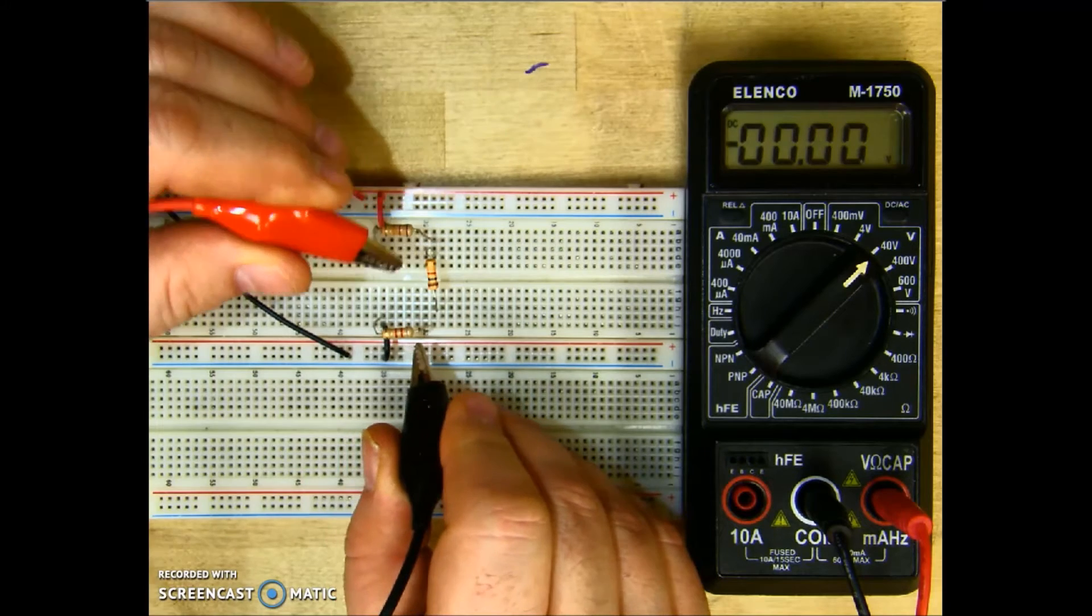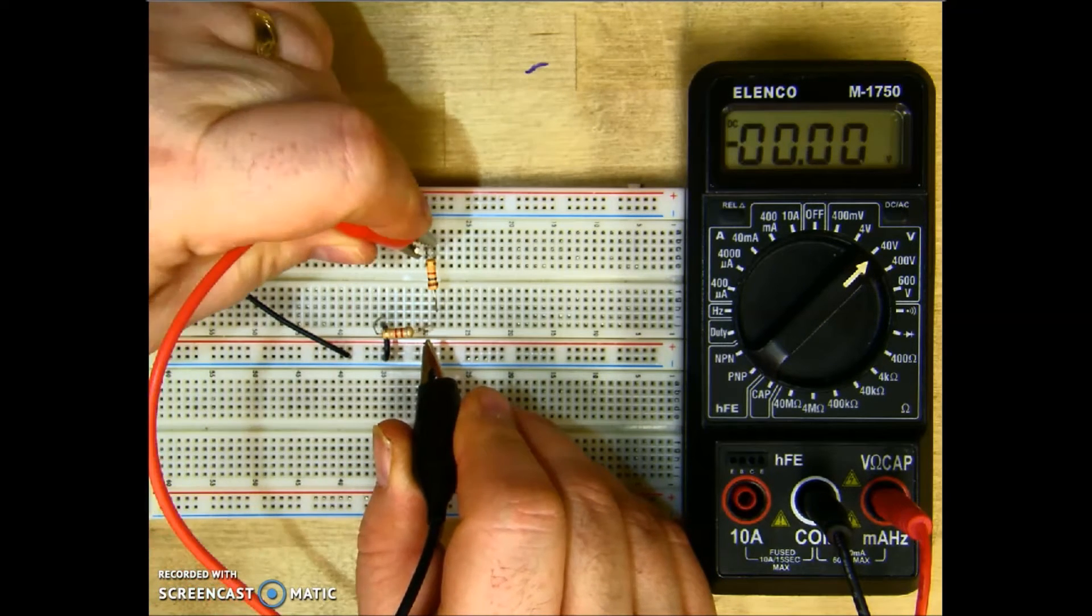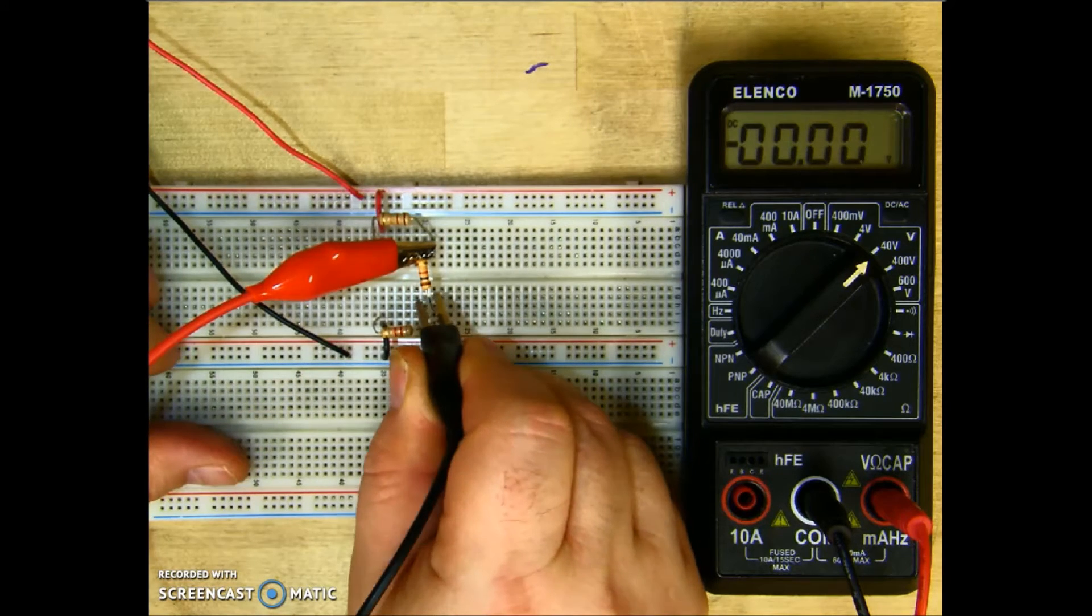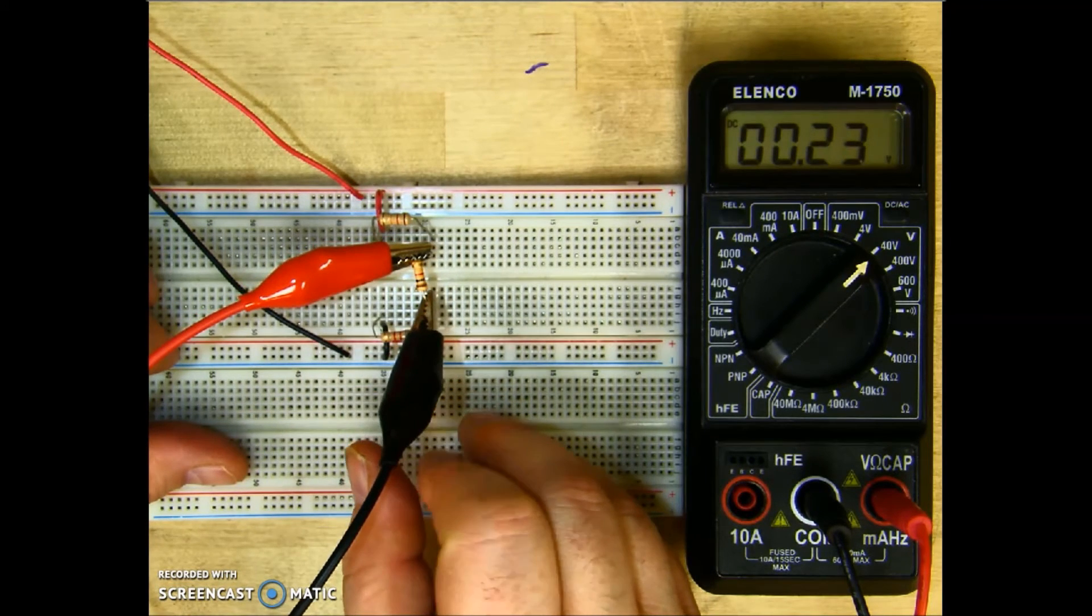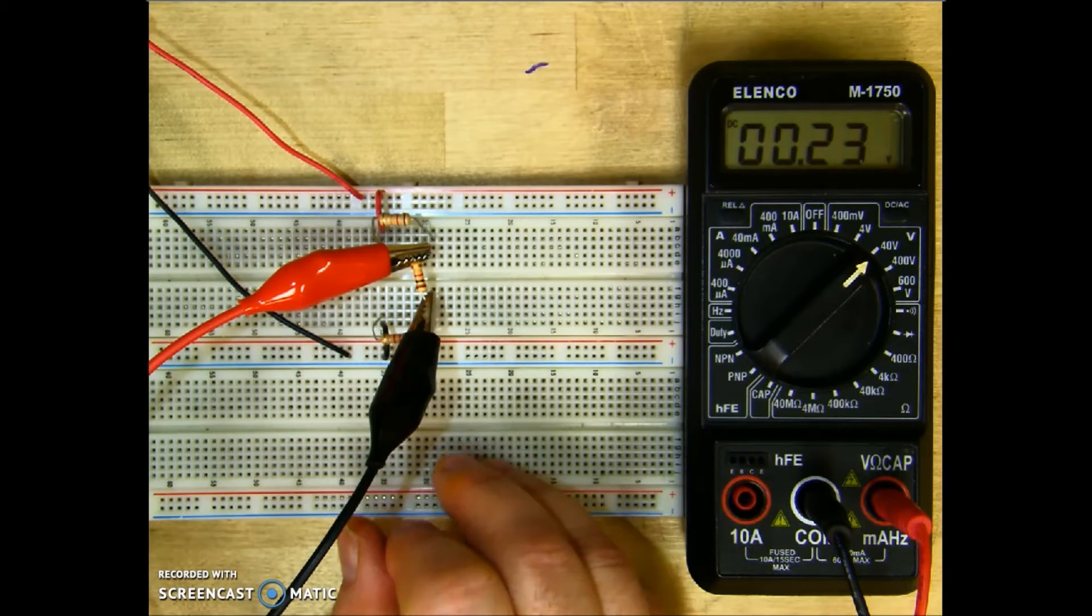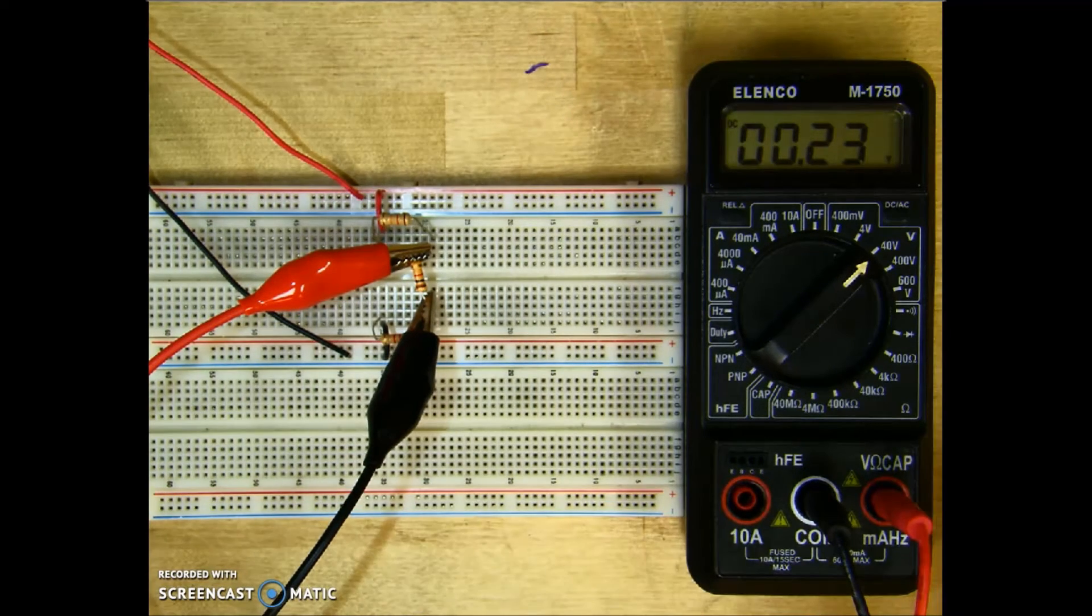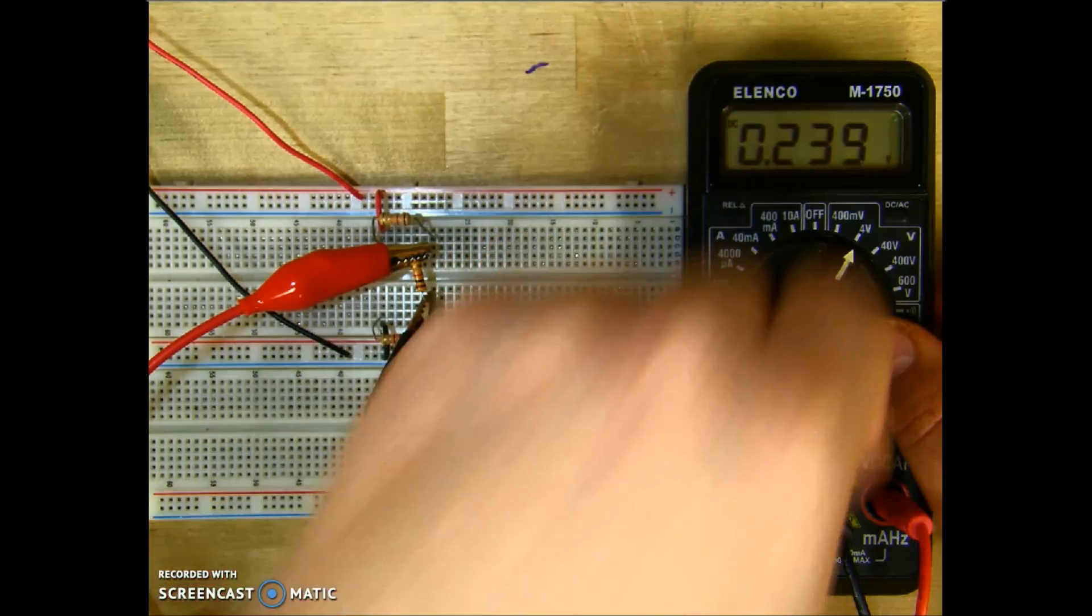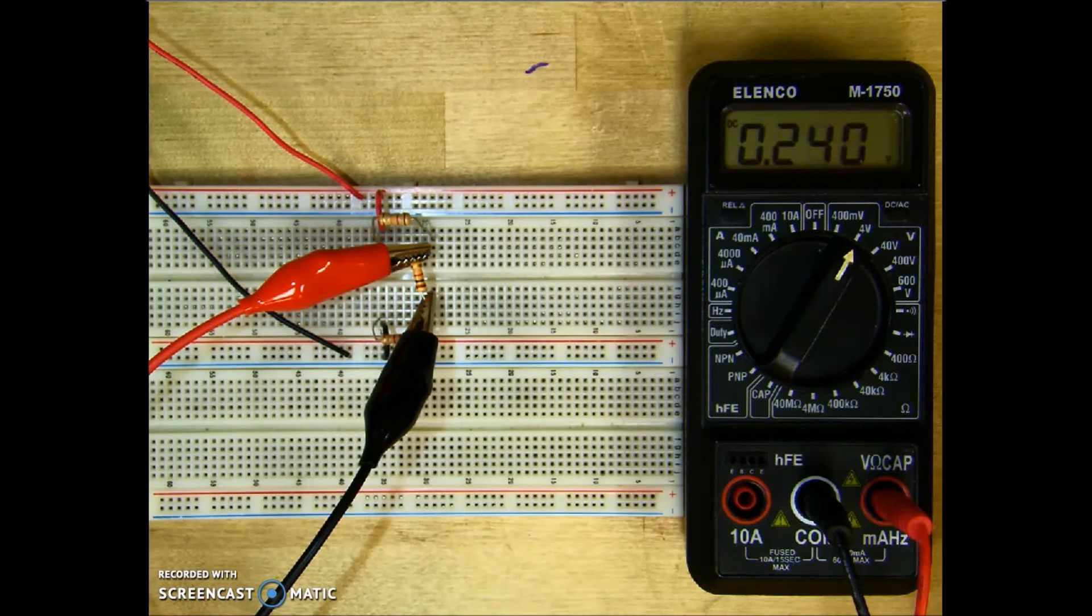Measuring R2, clipping on one side of the resistor. Again, keeping my red closest to the positive source. And clipping the other lead. And I see I've got 0.23 volts. Now again, because I am below my next lowest setting, which is 4, I can't turn my meter down to get a more accurate reading, which is 0.24.